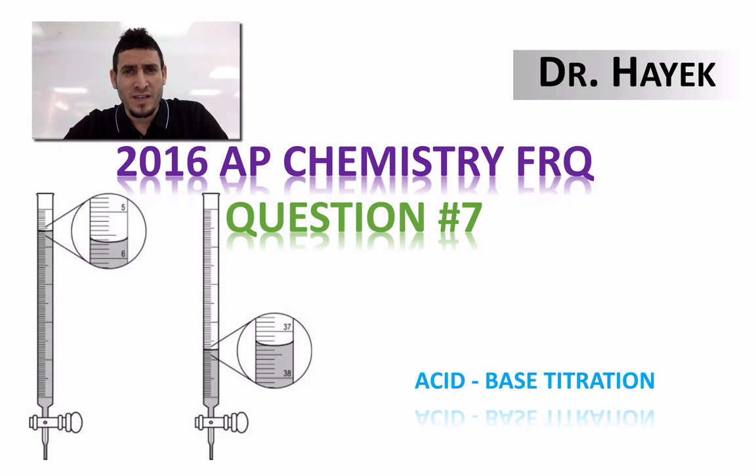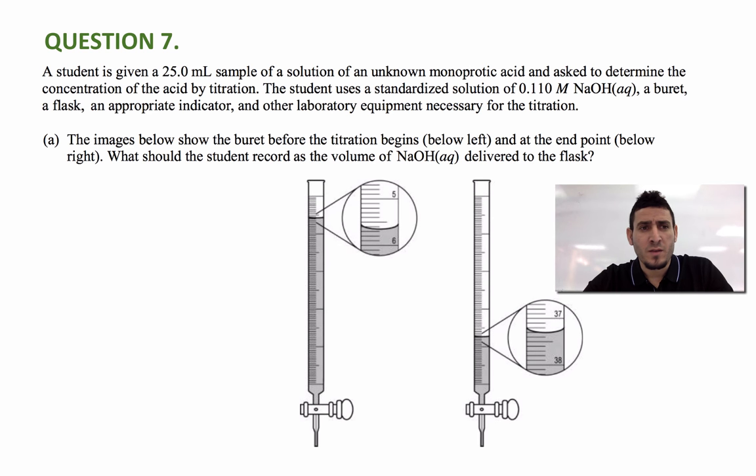Hi, this is Dr. Hayek. In this video I'm going to go over question 7 from 2016 AP chemistry exam in the free response part. Now the question says, a student is given a 25.0 milliliter sample of a solution of an unknown monoprotic acid, and asked to determine the concentration of the acid by titration.